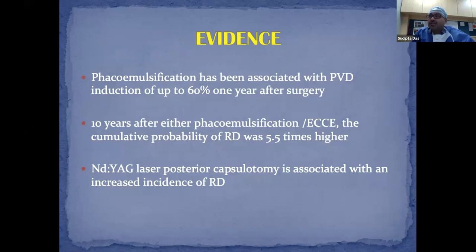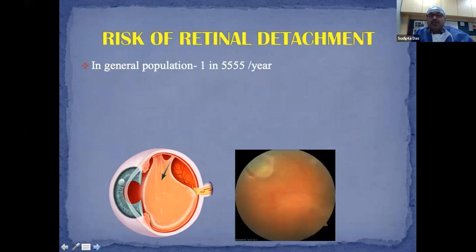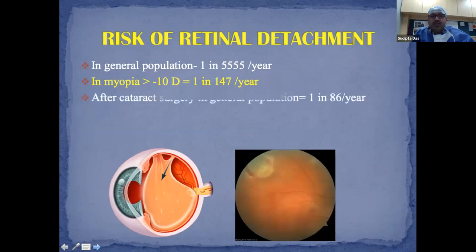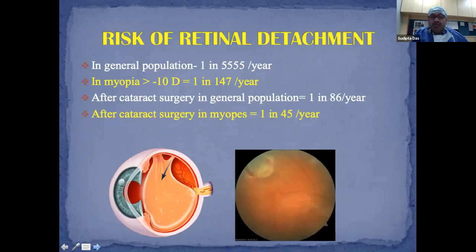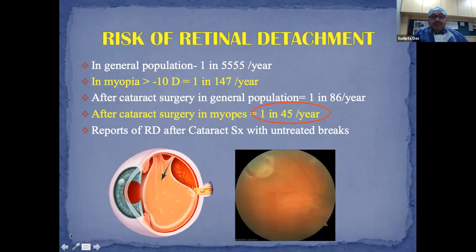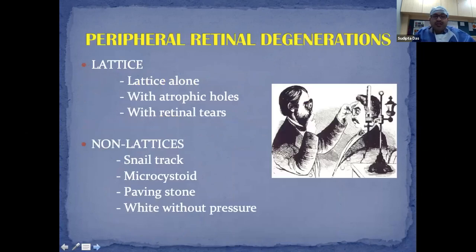Ten years after phacoemulsification or ECCE, the cumulative probability of retinal detachment was 5.5 times higher than normal. Nd:YAG posterior capsulotomy is also associated with increased incidence of retinal detachment. The risk of retinal detachment is approximately 1 in 5,500 per year in the general population, 1 in 147 per year in myopia greater than -10 diopters, and 1 in 86 per year after cataract surgery — doubling to 1 in 45 in myopes post-cataract surgery. Peripheral retinal degenerations are broadly classified as lattice and non-lattice. Non-lattice types such as microcystoid degeneration and paving stone degeneration generally don't require prophylactic therapy.